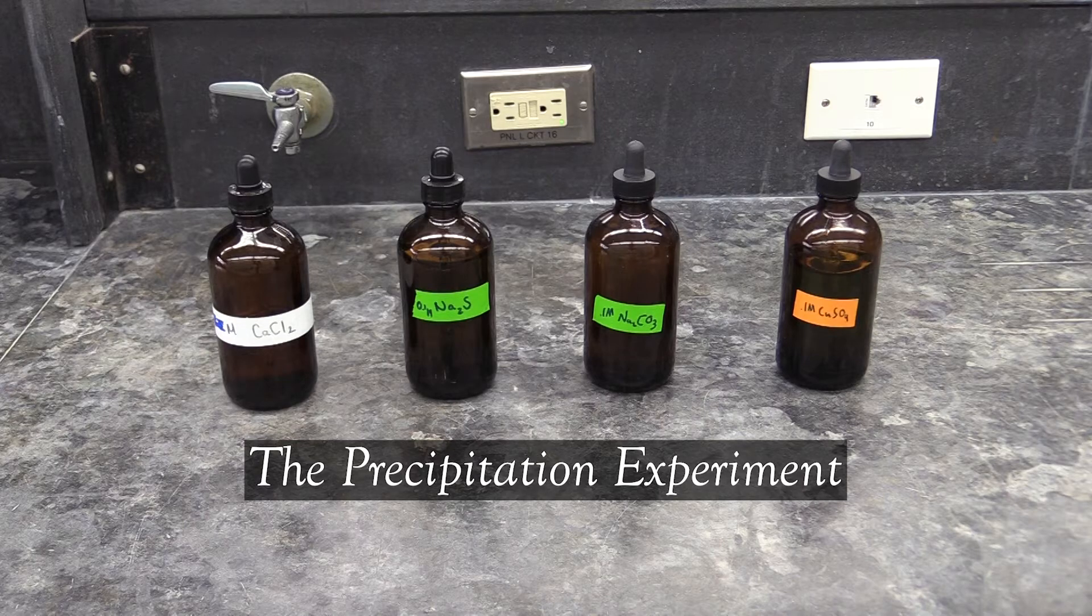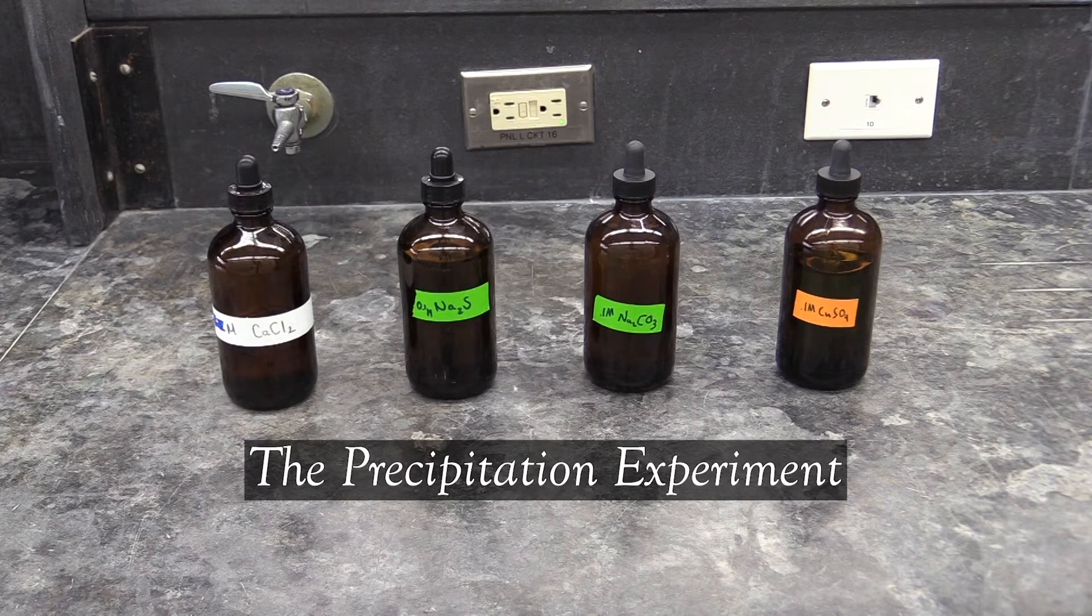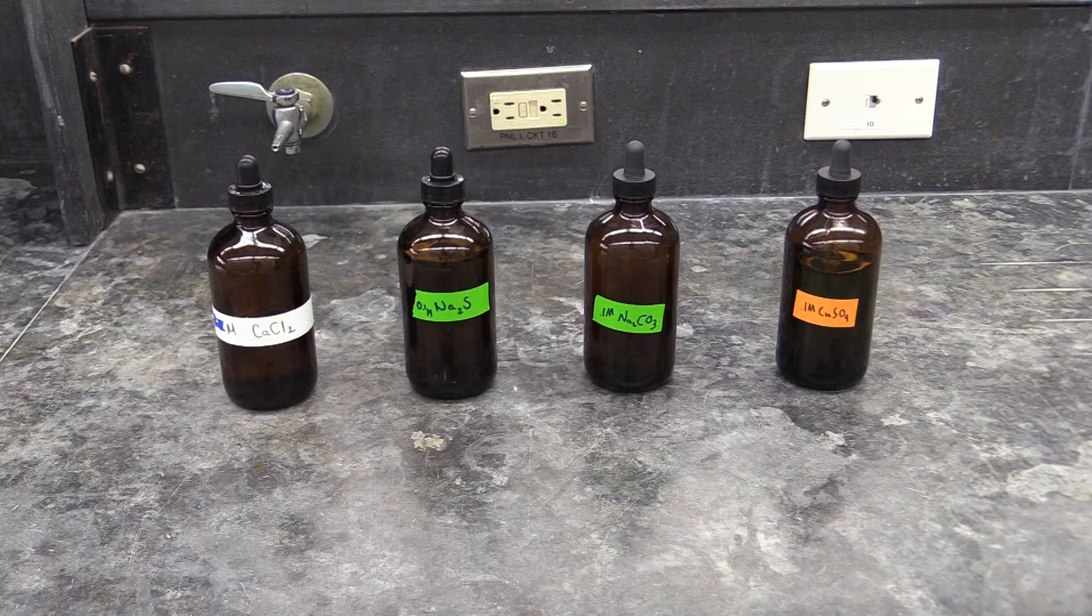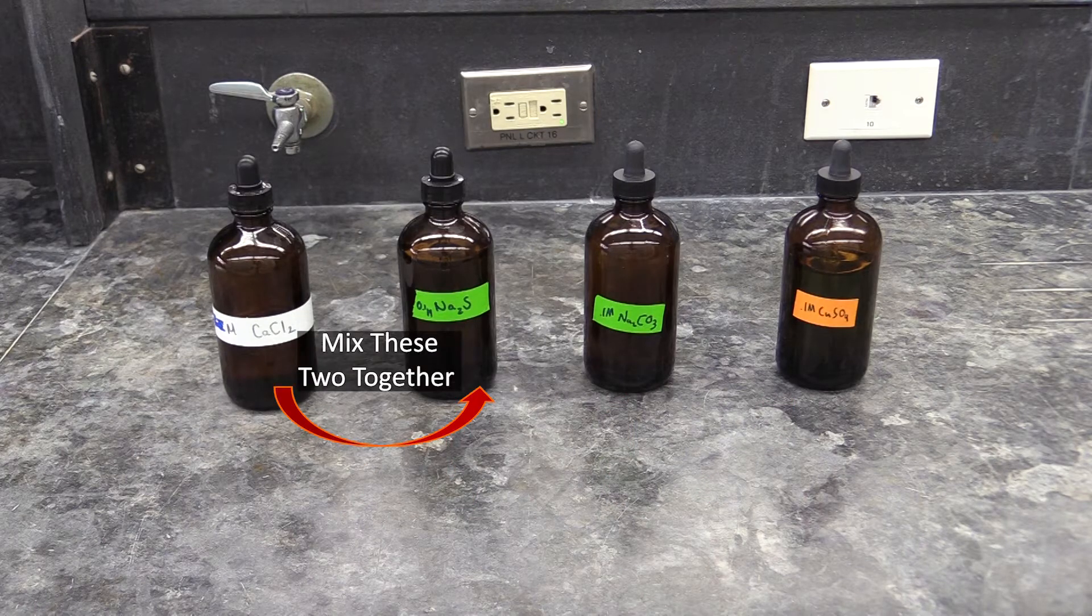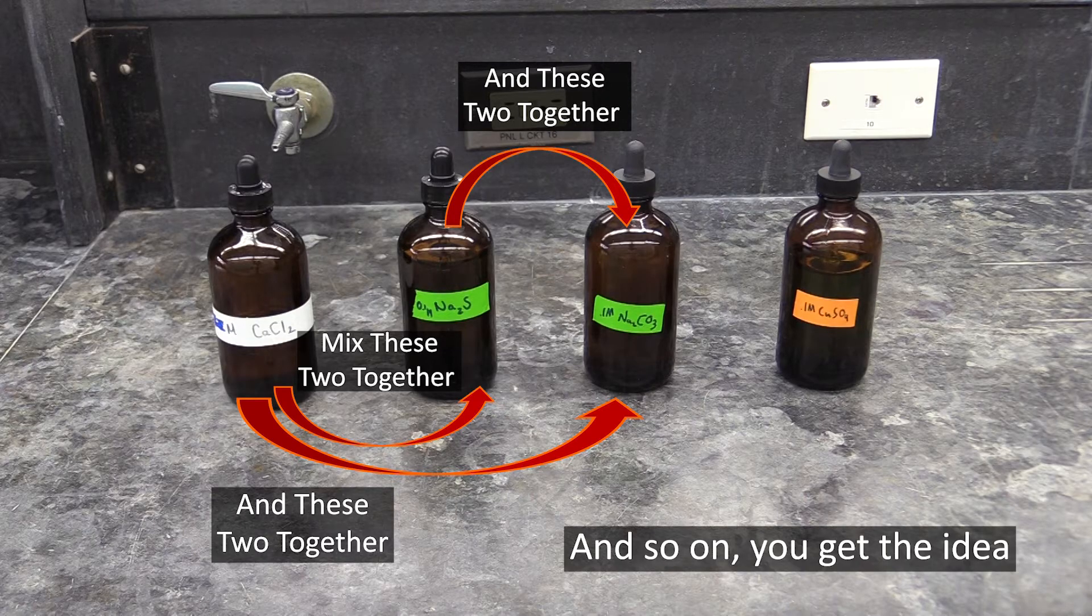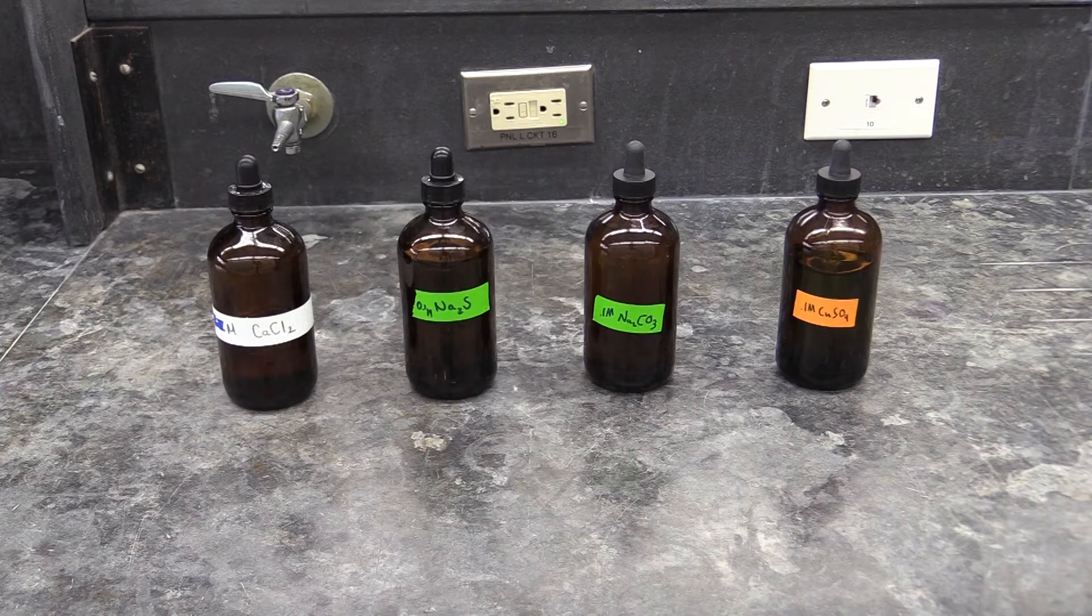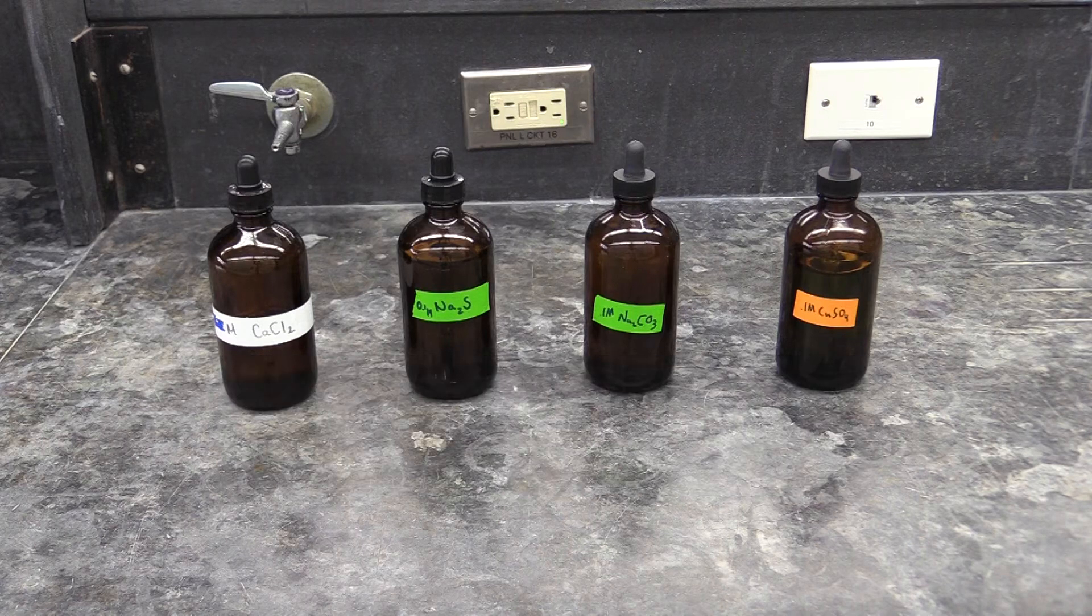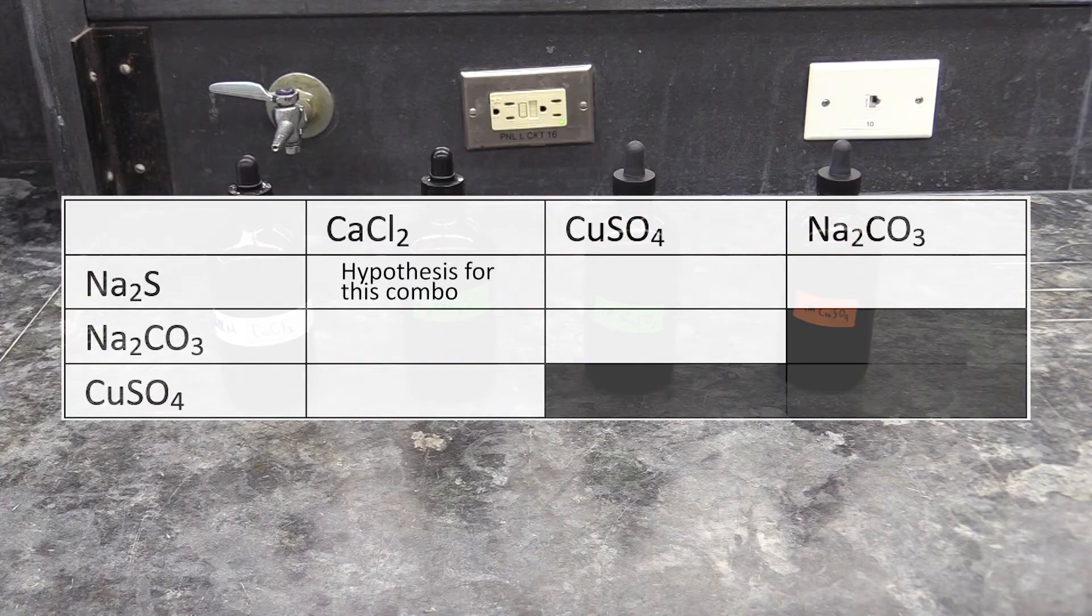The first experiment in your procedure involves the precipitation of insoluble salts. In this one, you will take several different salt solutions, mix them together two at a time in every possible combination they can be mixed, and see whether or not you get a precipitate. Before you come to lab, you will need to hypothesize which combinations will form a precipitate and which won't. To make this easier, for both your hypotheses as well as your data collection, try arranging the salts into tables in your notebook.